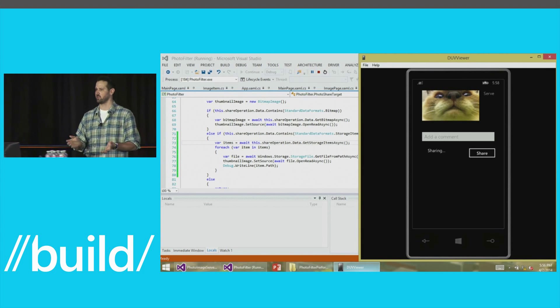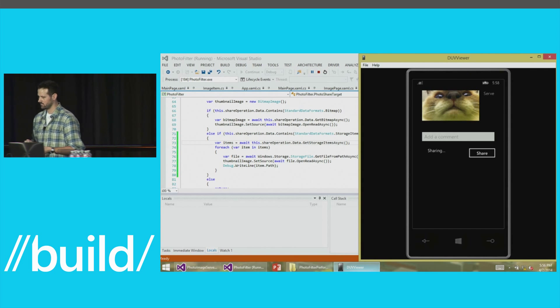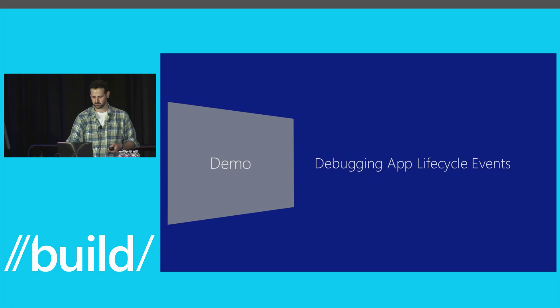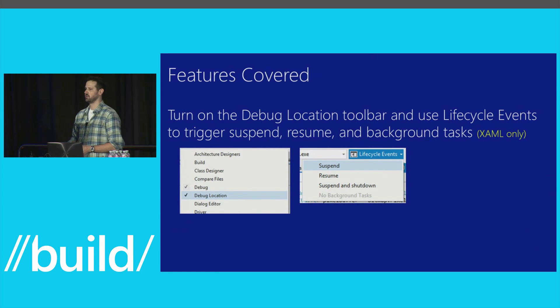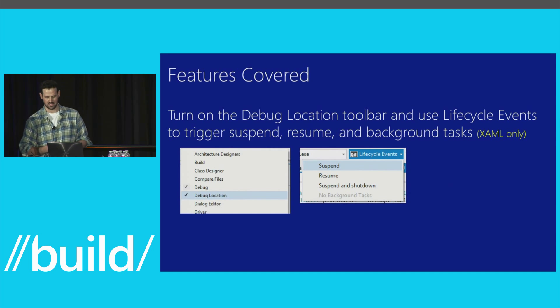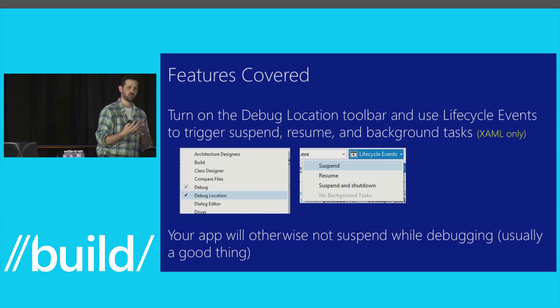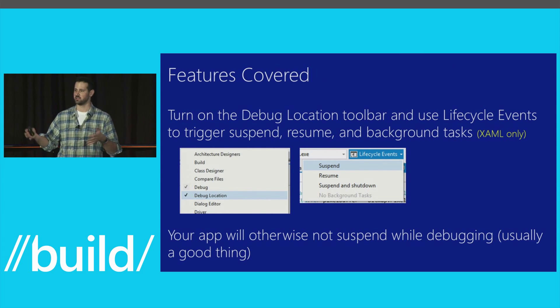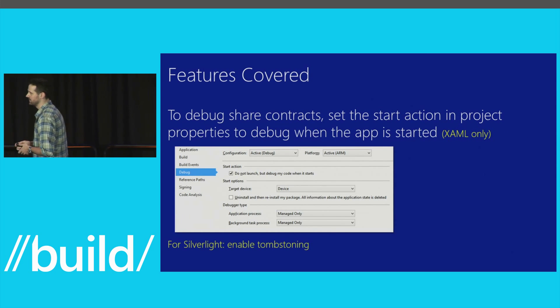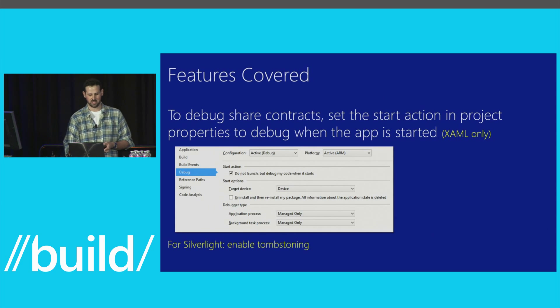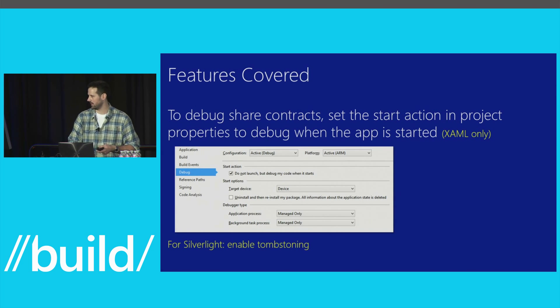Because I shared a picture from my camera folder, the file already existed on the phone, so instead of getting a bitmap image it's actually passing me a file handle. I just need to accept the file, open it, and pull the image out — a helpful developer left that code in here. Now when I press F5 again, deploy with the fix, and try sharing the cat picture, I hit the breakpoint, step through, it enters the correct condition, press F5, and the share contract works. For Silverlight, the equivalent feature would be to enable tombstoning.